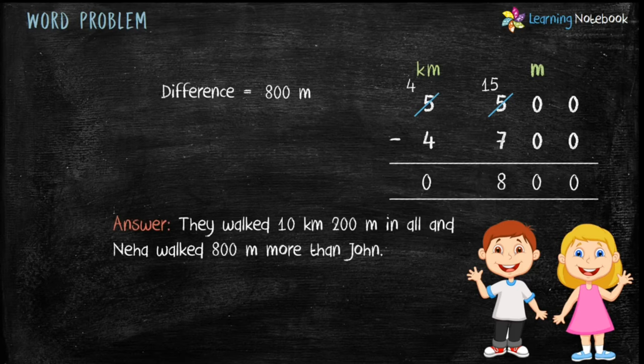Our answer statement: they walked 10 kilometers 200 meters in all, and Neha walked 800 meters more than John. In this video, we learned about standard units of measuring length — meter, centimeter, and kilometer — and how to convert kilometers into meters and meters into centimeters. We also solved a word problem based on length units.